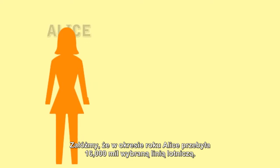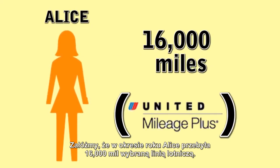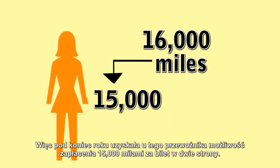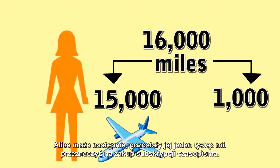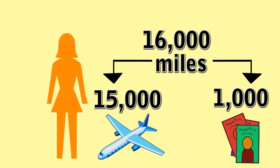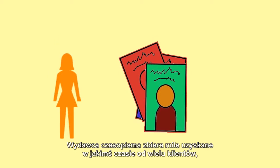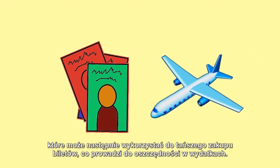Say over the course of a year, Alice travels 16,000 miles with a particular airline. At the end of the year, she can then use 15,000 miles with the same airline to purchase a round trip ticket. Alice can then use the 1,000 miles she has left over to purchase a magazine subscription. The magazine company accumulates miles over time from many customers that it can use to purchase tickets for less than what they would have otherwise earned.